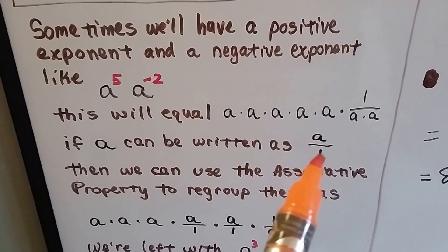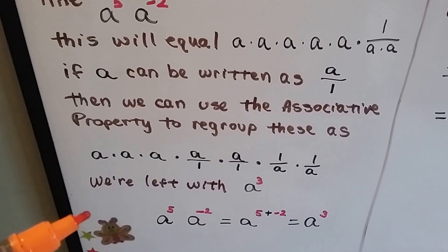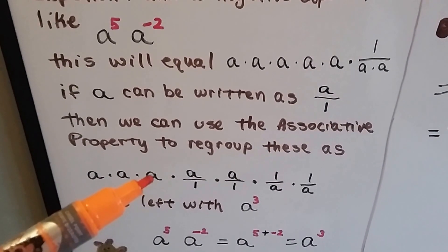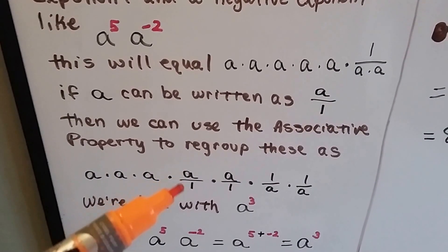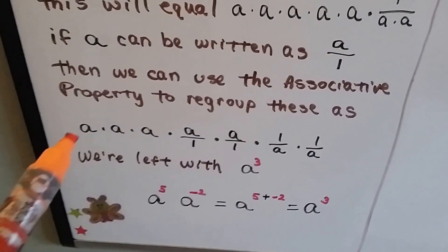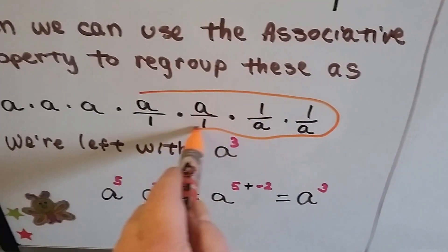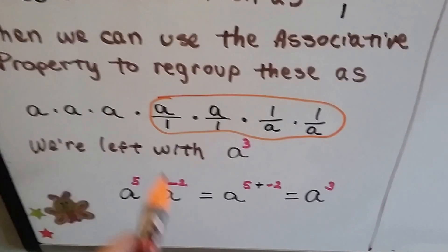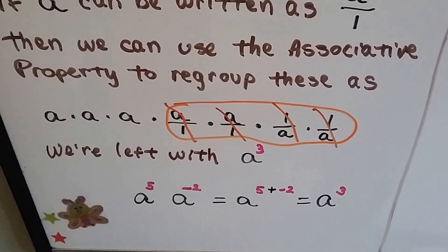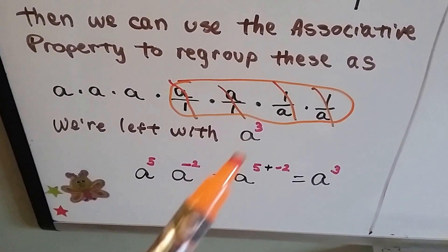If a can be written as a over one, we can use the associative property to regroup these as a times a times a times a over one, times a over one, times one over a times one over a. We can see that those cancel each other out — an a over an a makes a one — so we're left with a to the third power.